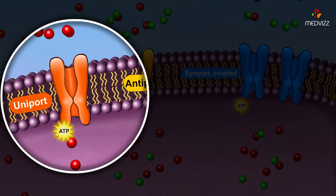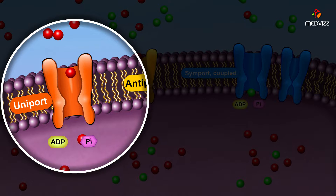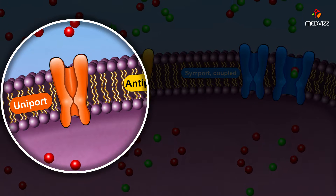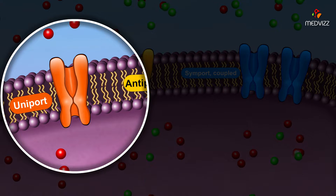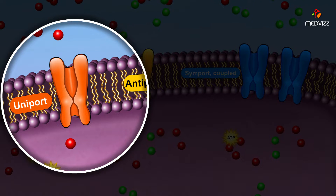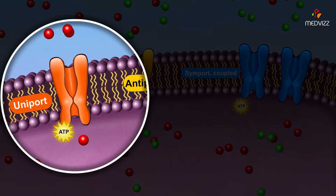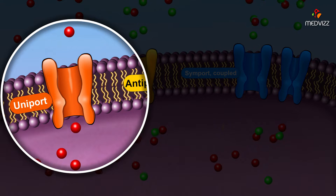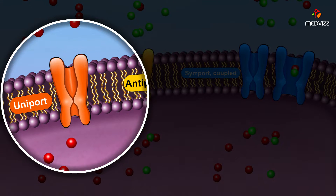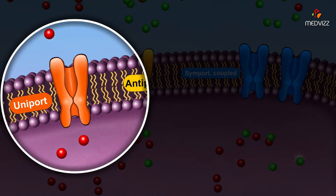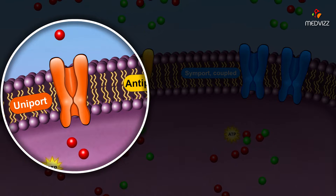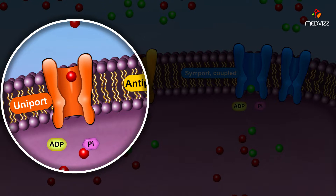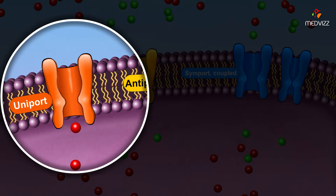A uniport is an active transport protein that transports a single molecule or a group of the same molecules in one direction against the concentration gradient. These proteins are also ATPases, using ATP to drive the transport.